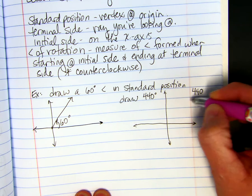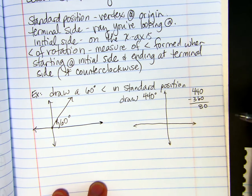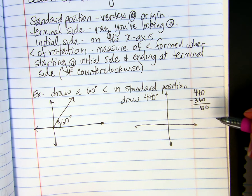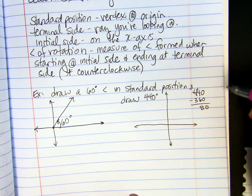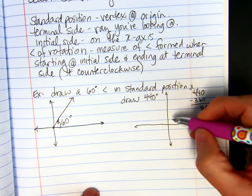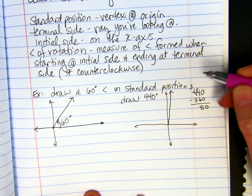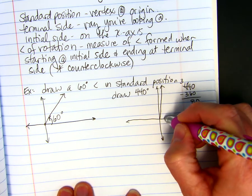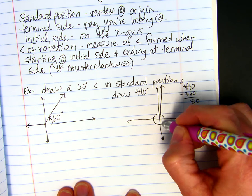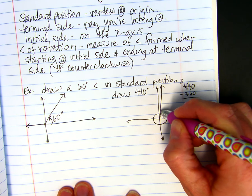So if I do 440 minus 360, I get 80 degrees. So my angle's going to end approximately right there. So 440 degrees starts at the x-axis, goes counterclockwise, one full rotation, and then to there.